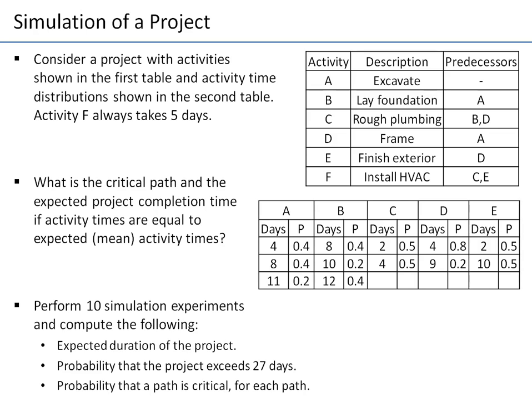The third example of a simulation will be a simulation of a project. Consider the following project with six activities — A, B, C, D, E, and F — with some names here, and we know the predecessors for every activity and the duration or activity time.